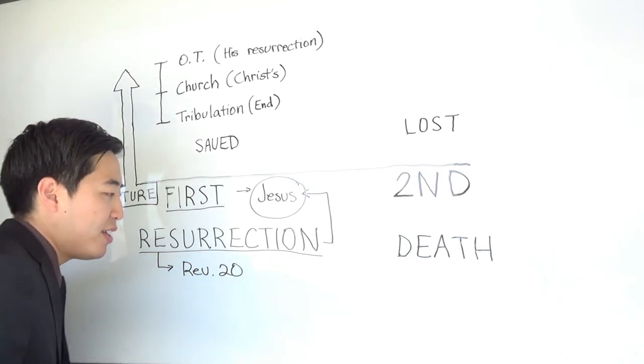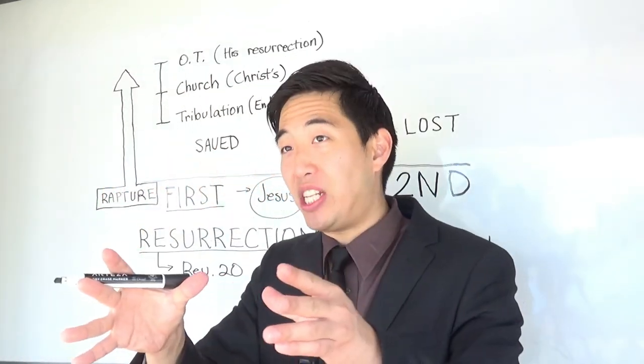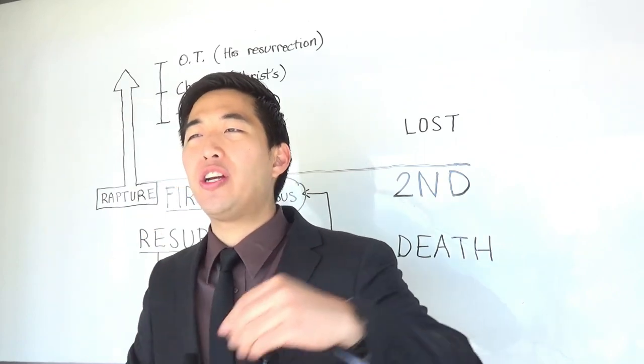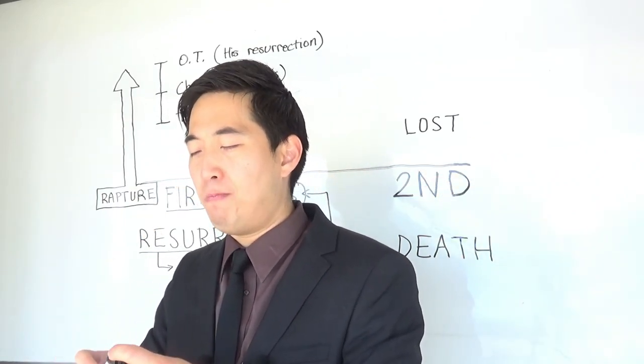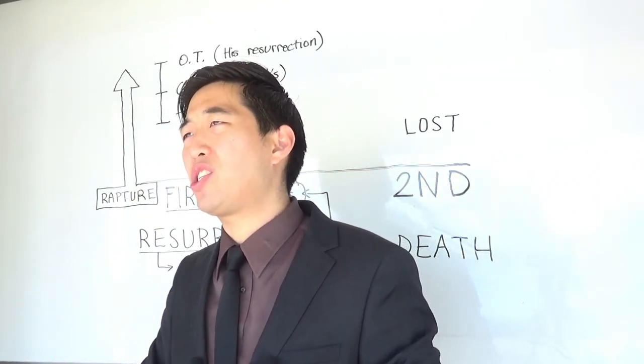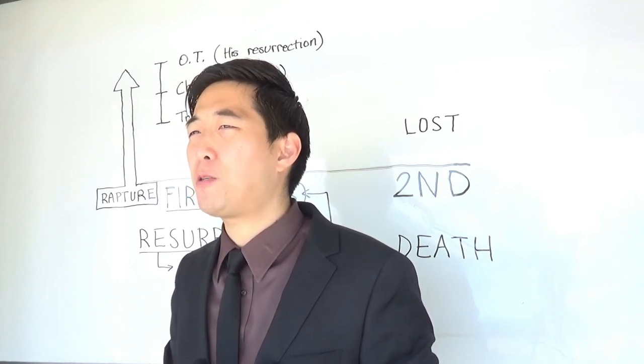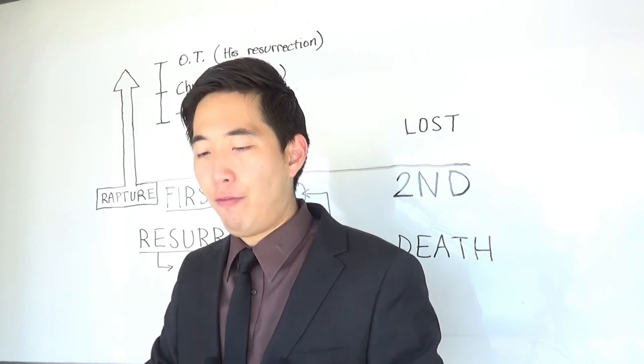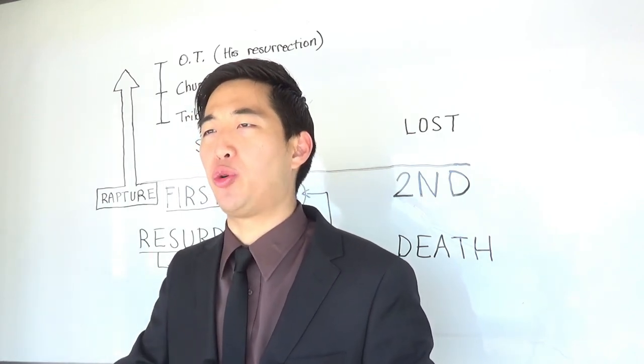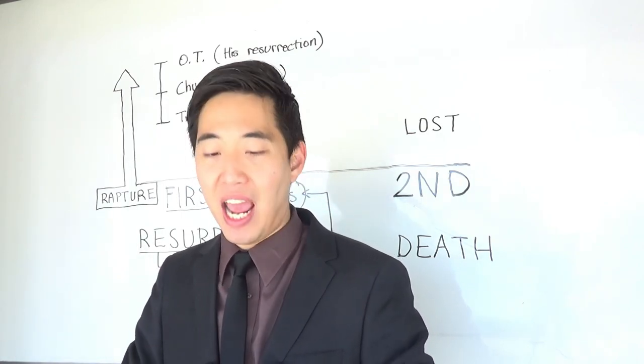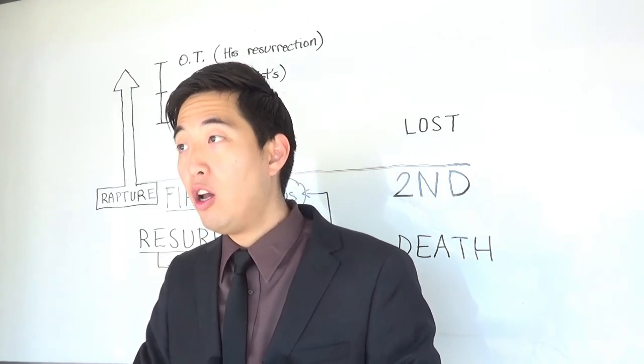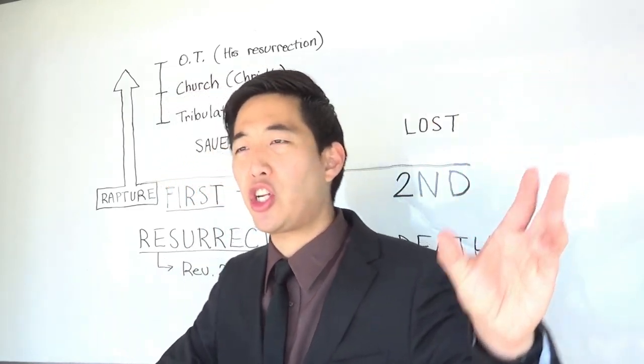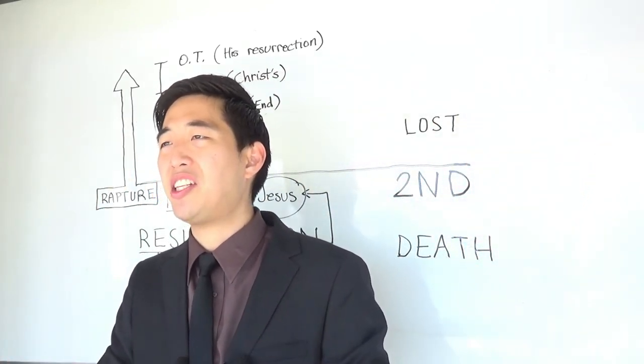So when we're in this end times here, in the end times, the first resurrection will be these tribulation people, and then the second resurrection afterward will be the lost people. It's that simple. He's not saying from all time of biblical history this is the first resurrection. No, he's saying in this case over here, as there's this millennium starting, we have a first resurrection and a second resurrection. It's that simple.